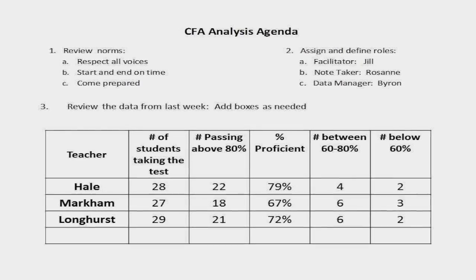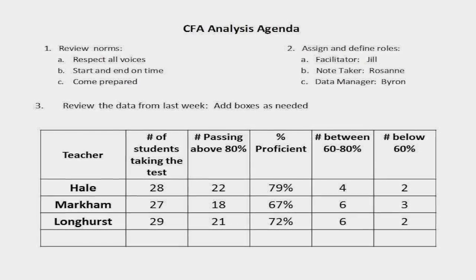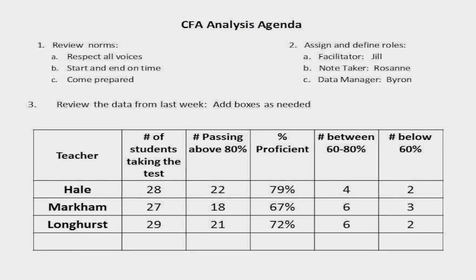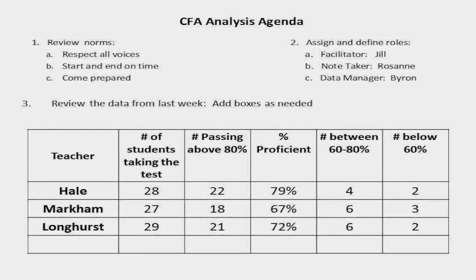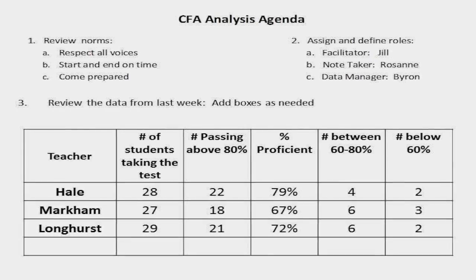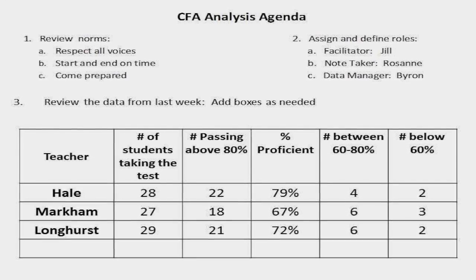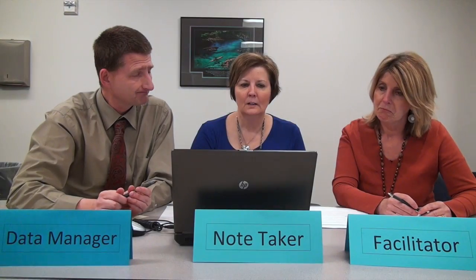Then in the next column is the number of students that are between 60 and 80%. Jill, you have 4, and then Roseanne and I both have 6 that fall in that column. And then the last column is the number of students below 60%. Jill, you have 2. Roseanne, 3, and I have 2. Even though we didn't get all of our kids to mastery, I feel so good about that.